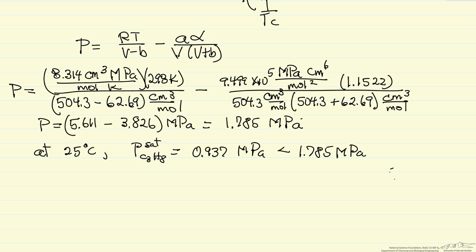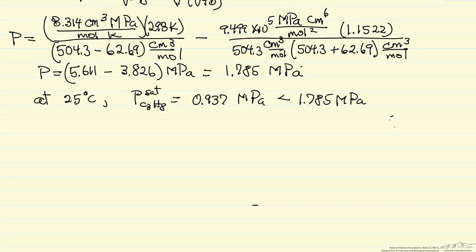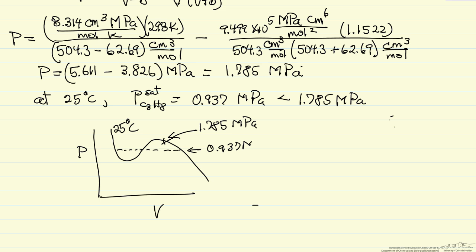Well, we're not going to have a pressure greater than the saturation pressure at this condition unless we have a liquid present, but it turns out liquid volume is much smaller. So what's happening is that if we look at a pressure-volume diagram, and we have some cubic equation of state, here's saturation conditions, and basically we've substituted in the value for volume, and we calculate the pressure here. This is the pressure 1.785 megapascals. This isotherm is for 25 degrees C. This saturation pressure is 0.937 megapascals.